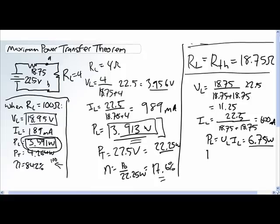So now power total is equal to the total applied voltage times the current, so 22.5 times 600 milliamps, 13.5 watts.